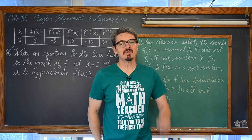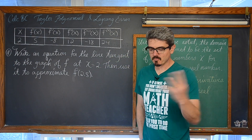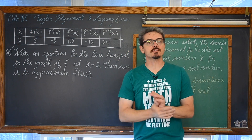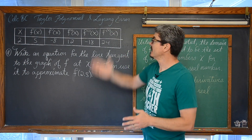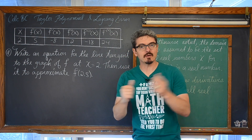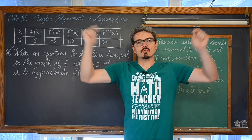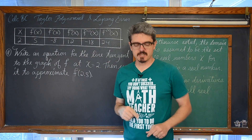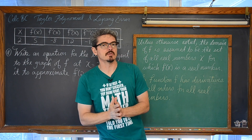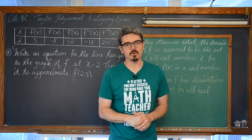BAM! Mr. Tarrou! In this video we are going to take a look at a four part question involving Taylor polynomials and the upper bound of the Lagrange error. In the description you will find timestamps to jump ahead to each of the four parts of this video and describing what those four parts are.